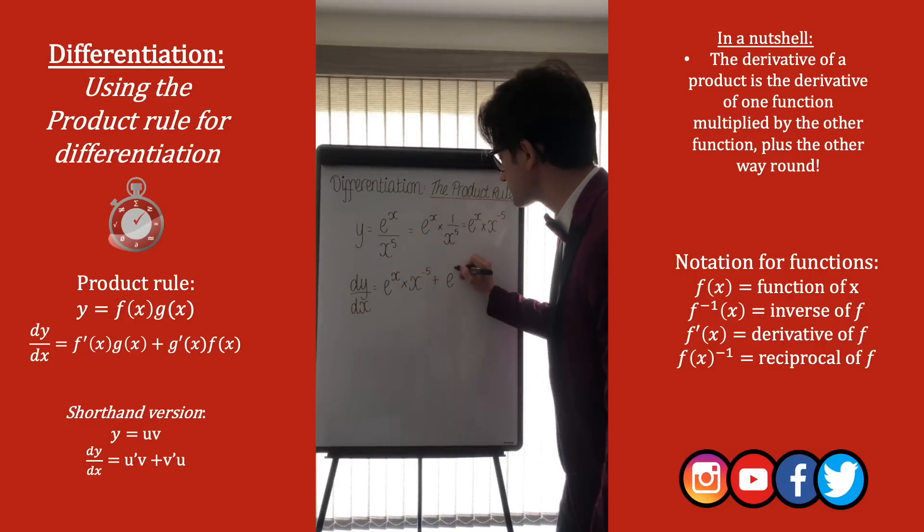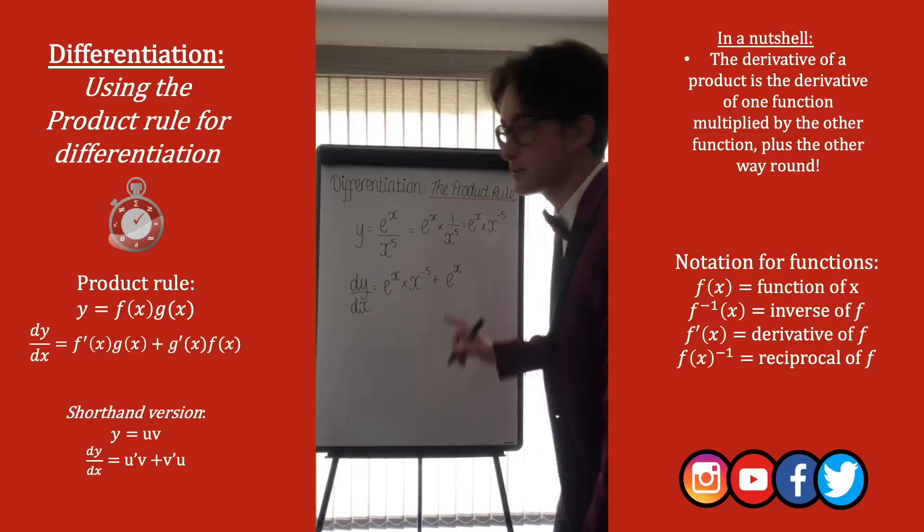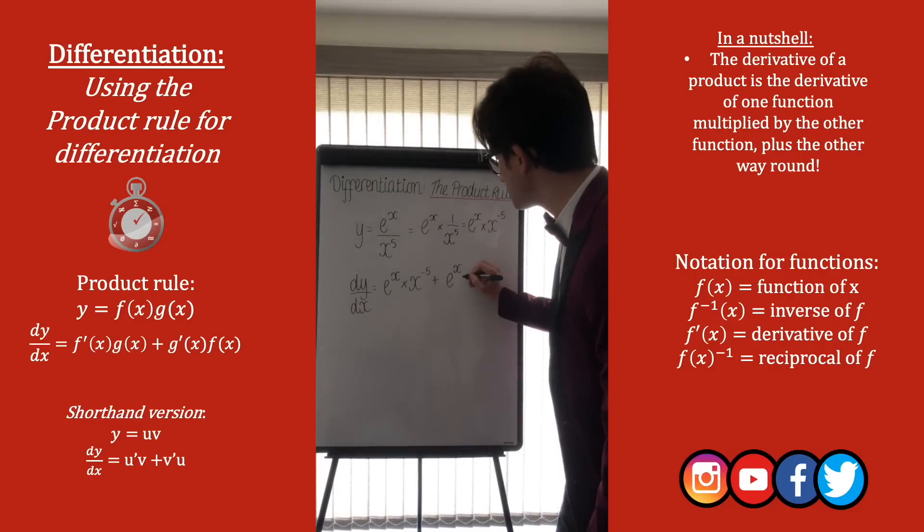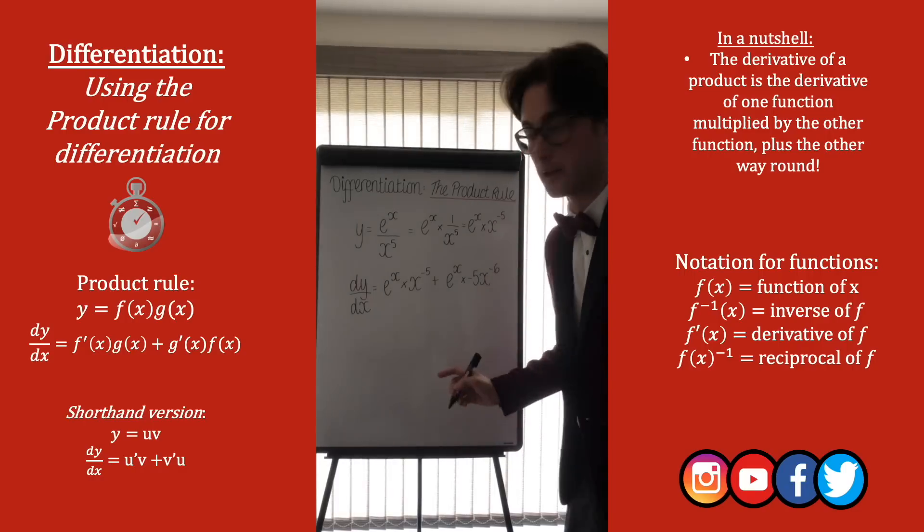And then add the other way round, e to the x, not differentiated, which is still e to the x, times by the derivative of x to the minus 5. So we times by the power, and then minus 1 from the power, and we get minus 5x to the minus 6.